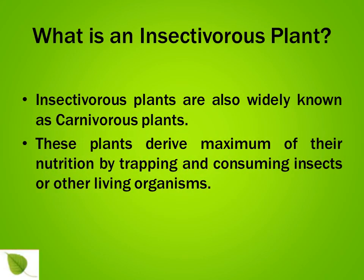What is an insectivorous plant? Insectivorous plants are also widely known as carnivorous plants, and they derive the maximum of their nutrition by trapping and consuming insects or other living organisms.